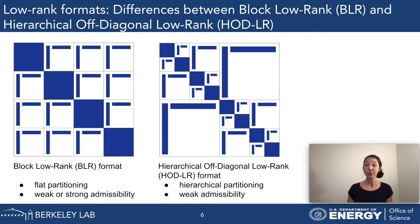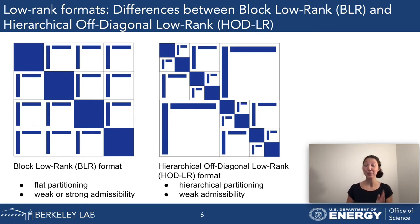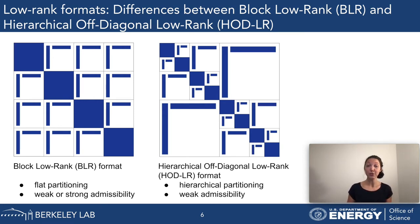First we separate the matrix into four blocks—two off-diagonal blocks and two diagonal blocks. Then, as visualized here, the diagonal blocks on the second level of the hierarchy are separated again into four blocks, and so forth. For the block-low-rank format, the flat partitioning immediately clusters the matrix into 16 sub-blocks.